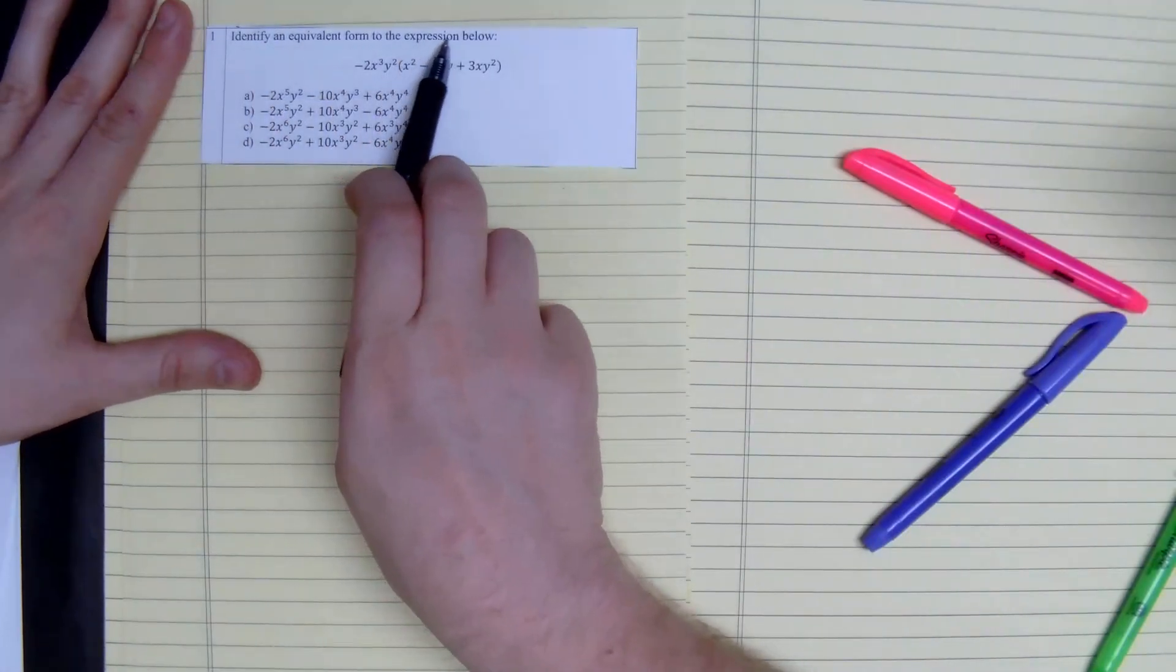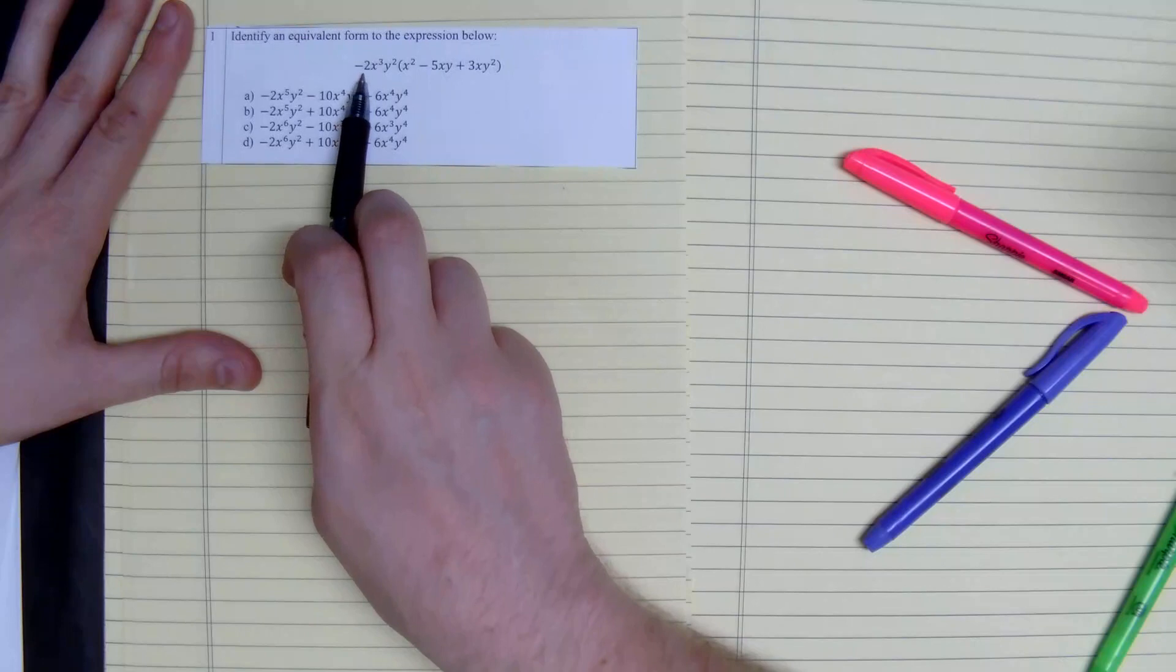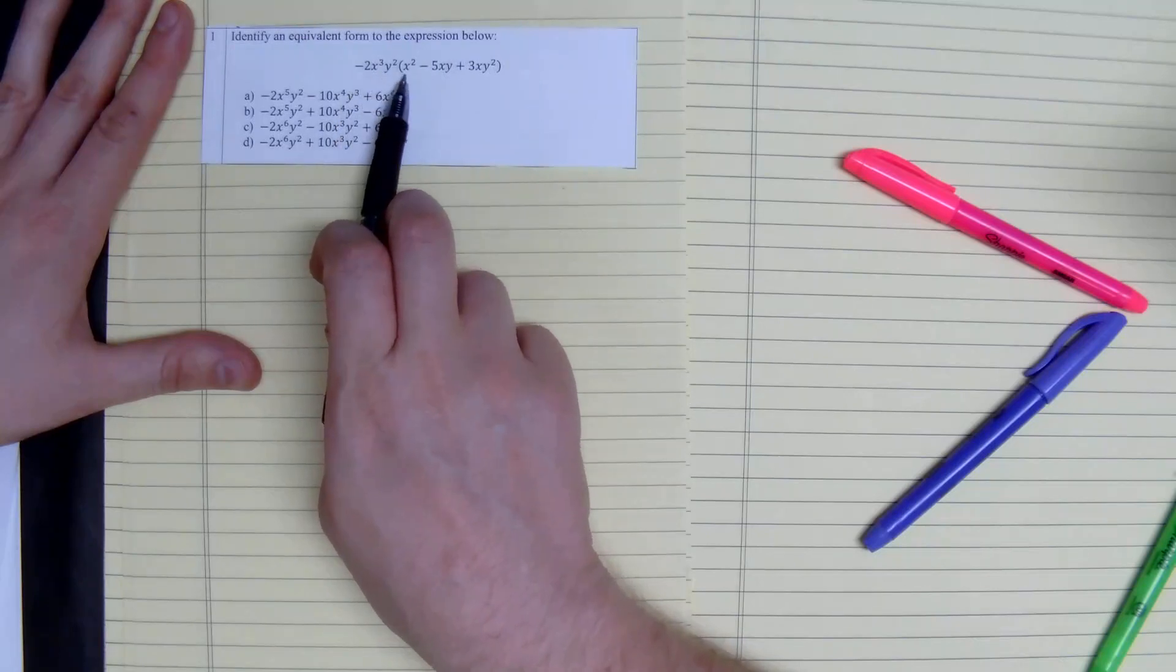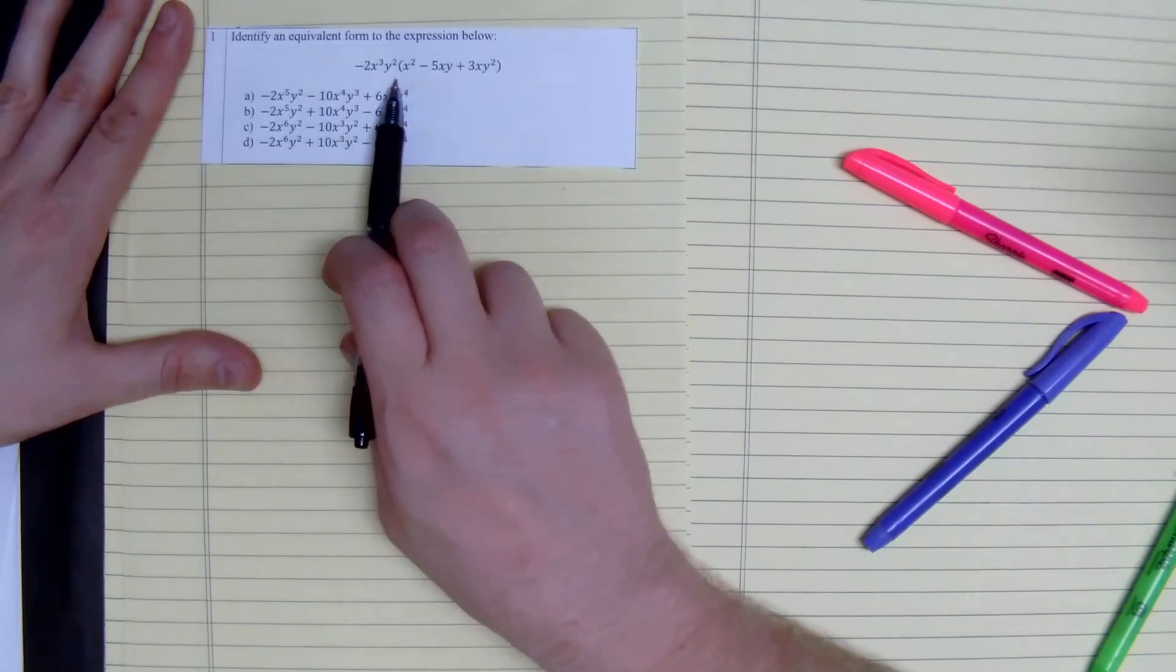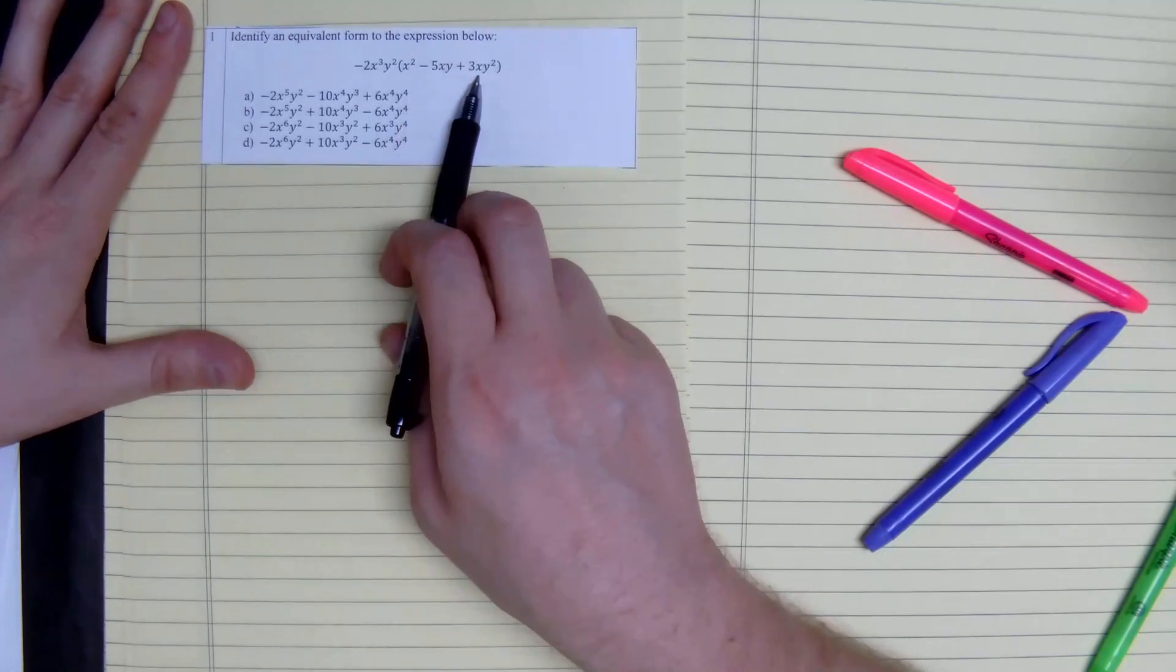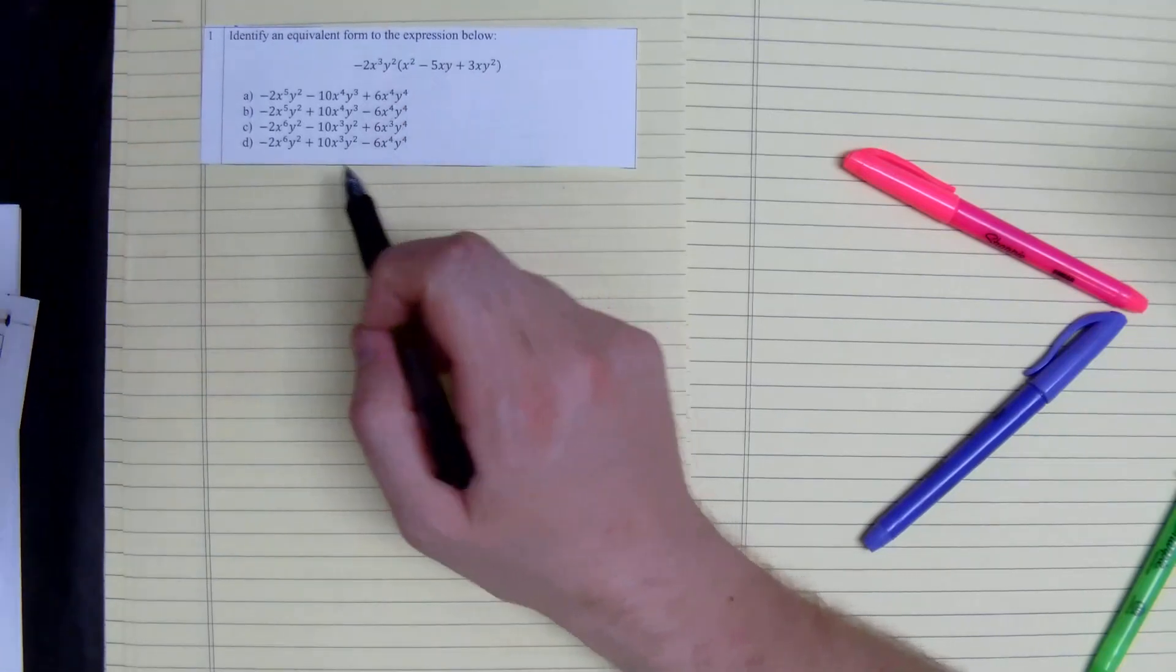Identify an equivalent form to the expression below. We have negative 2x cubed y squared times the quantity of x squared minus 5xy plus 3xy squared. Looks like we're distributing.